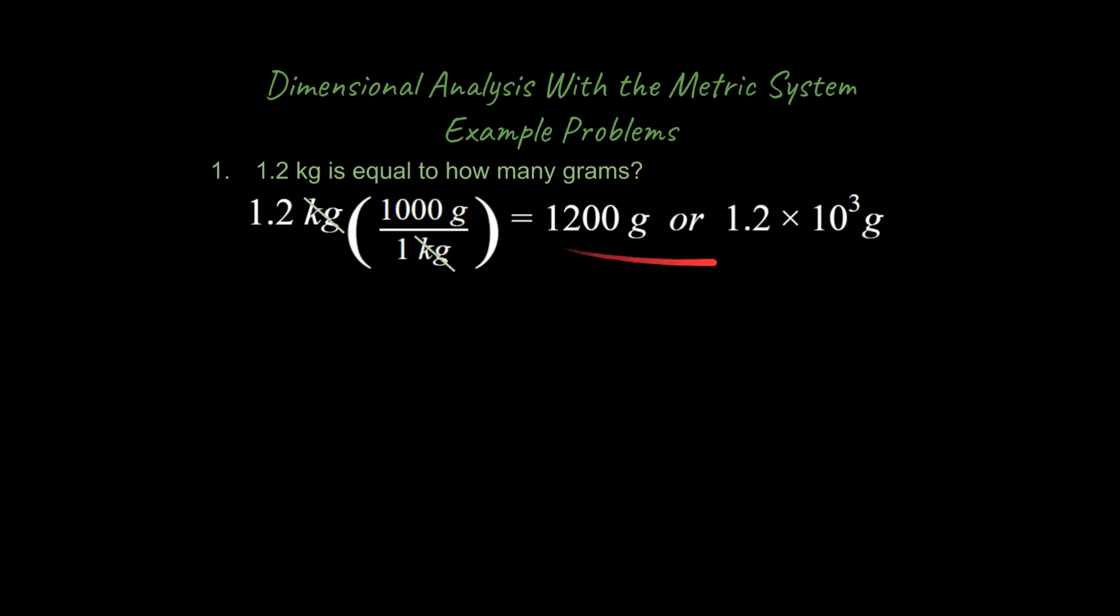I do want to point out that one good thing about scientific notation is I think it's easier to note how many sig figs you have. Here it's clear we have two sig figs that we're dealing with. And so in my mind, it's actually easier to work with scientific notation than numbers, especially when you have a lot of zeros to count. It's easy to miscount your zeros and get the problem wrong.